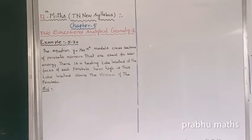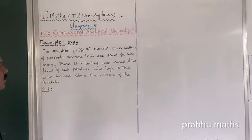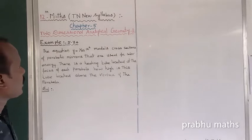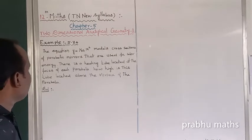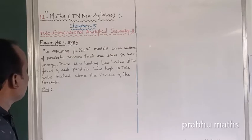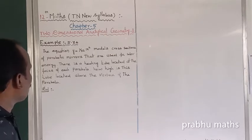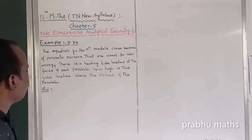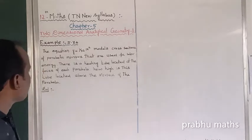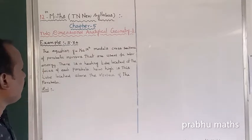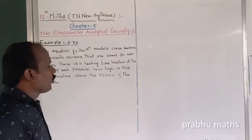Example 5.34: The equation y is equal to 1 by 32 into x square models cross sections of the parabola mirror that are used for solar energy. There are heating tubes located at the focus of each parabola. How high is this tube located above the vertex of the parabola?